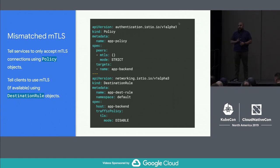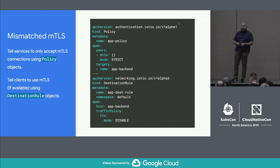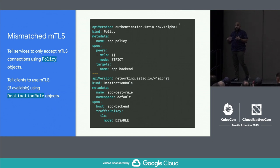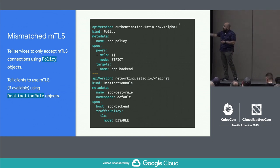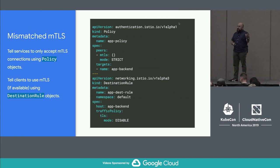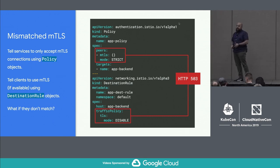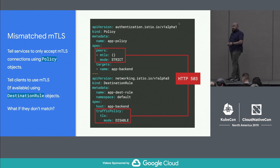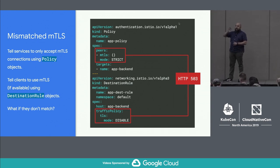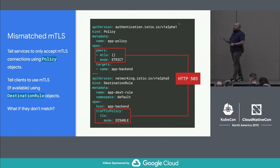Another one is a mismatched MTLS situation. You may have a host-level policy saying services must only accept MTLS connections, but then a destination rule — which controls what clients do in Istio — comes in and says I'm going to disable MTLS. Now the problem is that service is expecting an authenticated connection, but clients aren't supplying one, so you end up with 503s. This is a situation where you probably want to deny admission to objects that do this sort of thing — not just for security, but because this is going to be end-user facing.